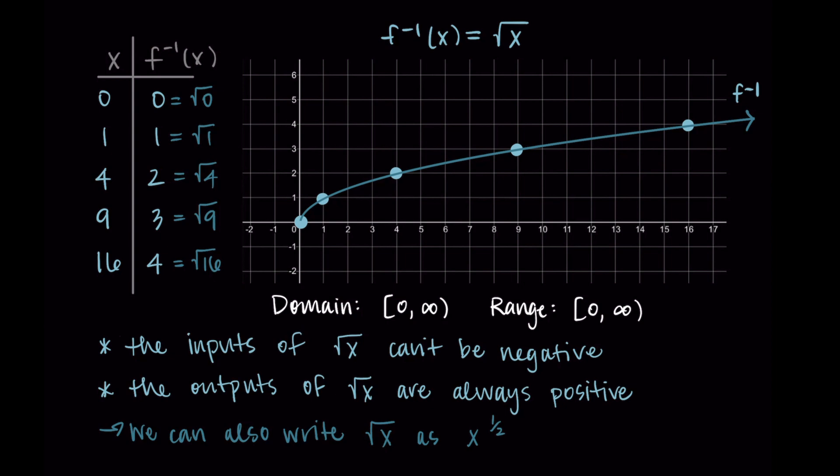That is the really basic introduction to where radical functions come from. They are defined as the inverse of quadratics when we restrict the domain appropriately. That's it for this one. Thanks so much for watching and I will talk to you in the next one.